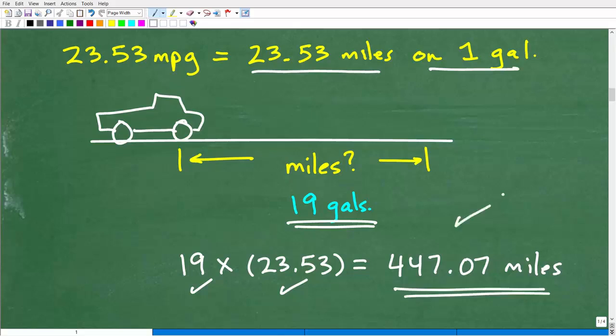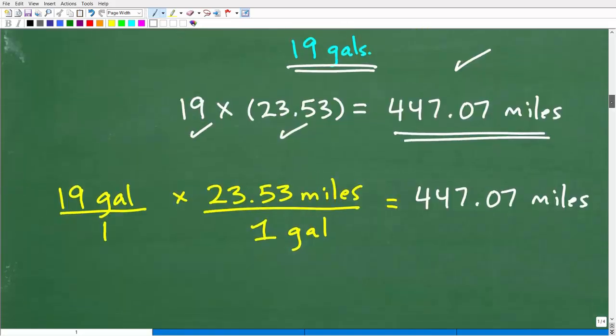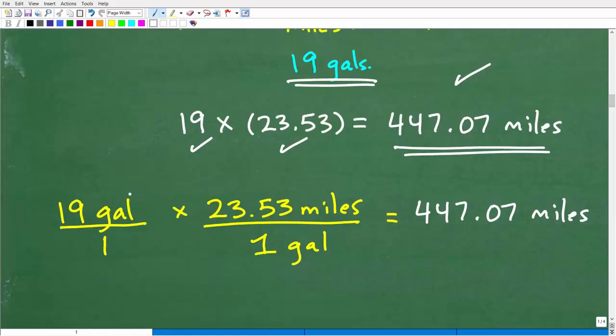That is the answer, but I'm not done yet because I want to make sure you understand how we're dealing with units of measure. The question is we're talking about how many miles will you travel on 19 gallons. And we know that our mileage here is miles per gallon and we're multiplying by gallons. So let's just make sure we're doing this correctly with the units of measure. So 19 gallons, or 19 over 1, being multiplied by the MPG, which is miles per gallon, but I'm going to write it this way: 23.53 miles per one gallon. That's what that means.